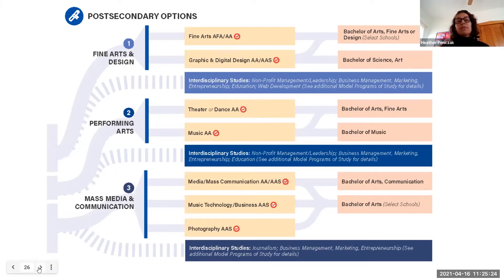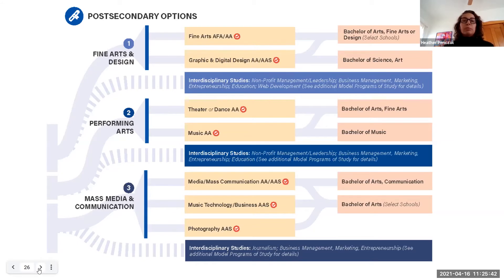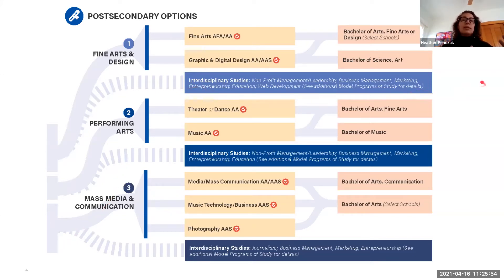Looking at post-secondary options, we have three paths within this program of study: Fine Arts and Design, Performing Arts, and Mass Media and Communication. These track into different Associates of Fine Arts, associate degrees, and up to Bachelor of Arts programs. Through advisory committee work, interdisciplinary options kept bubbling up across fine arts and performing arts — there are a lot of opportunities in nonprofit management, business management, marketing, entrepreneurship, and education roles within any of these pathways.